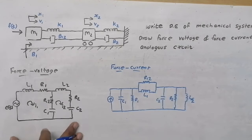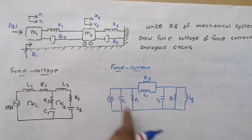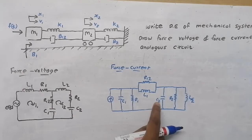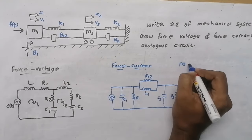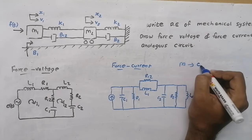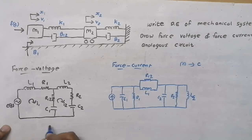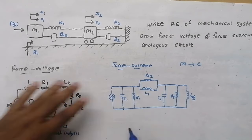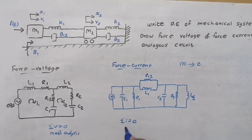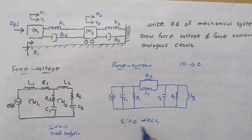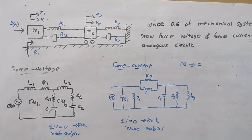This is the force voltage circuit and the force current circuit of the mechanical system. Note: mass m2 gives capacitor C2 in the force current circuit. In the force voltage circuit, elements are in series and we use KVL (mesh analysis). In the force current circuit, elements are in parallel and we use KCL (node analysis). This completes the force voltage and force current analogous circuits for this mechanical system.